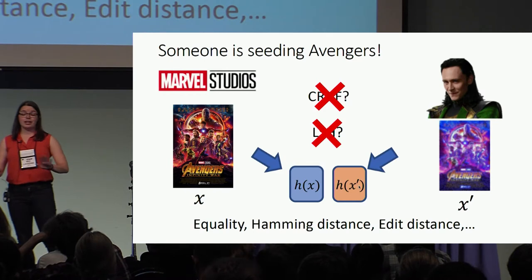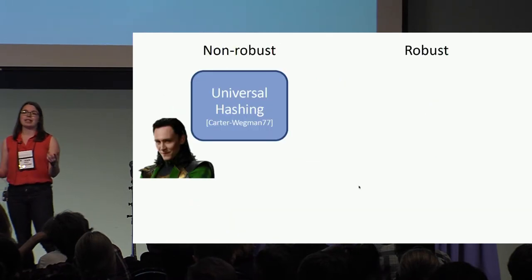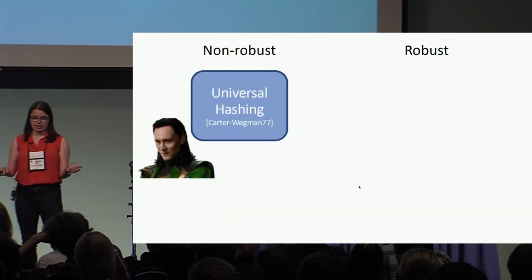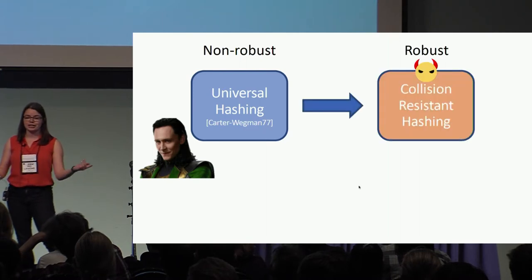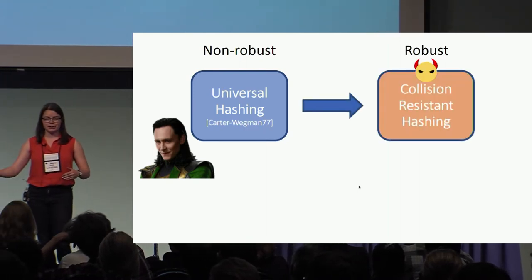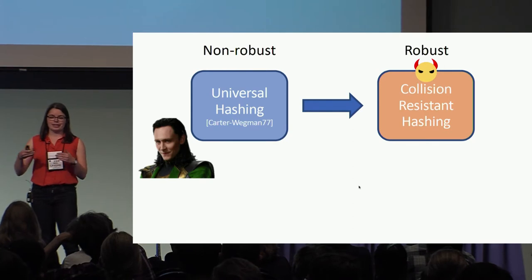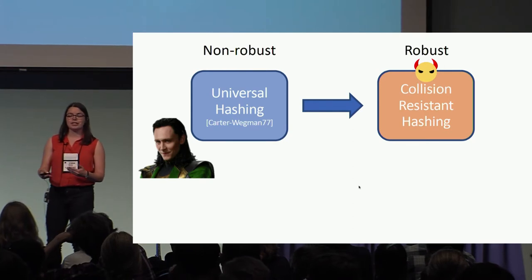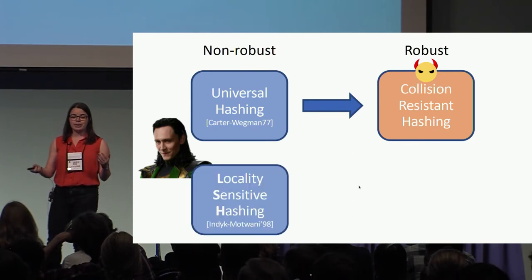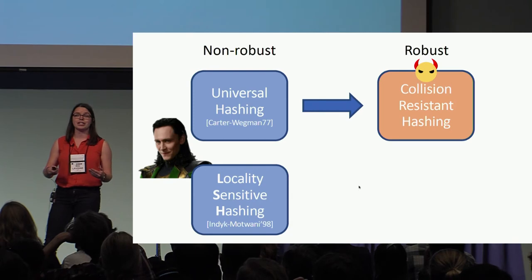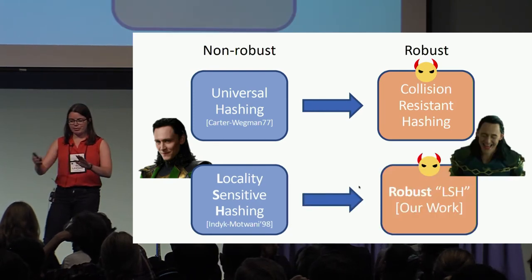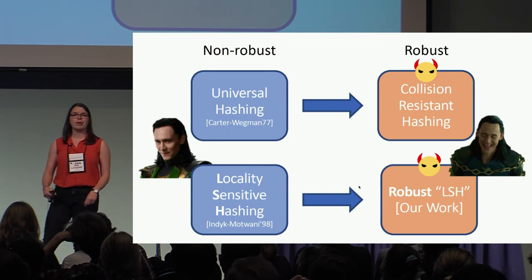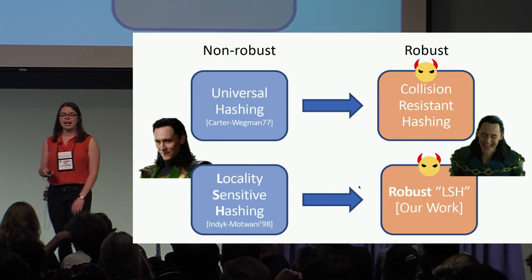In other words, we want to do the same thing that was done to universal hashing, but for more general properties. Universal hashing was taken into the robust setting via this notion of collision-resistant hashing, and what we want to do is take locality-sensitive hashing as well as other types of properties and make them robust locality-sensitive hashing.